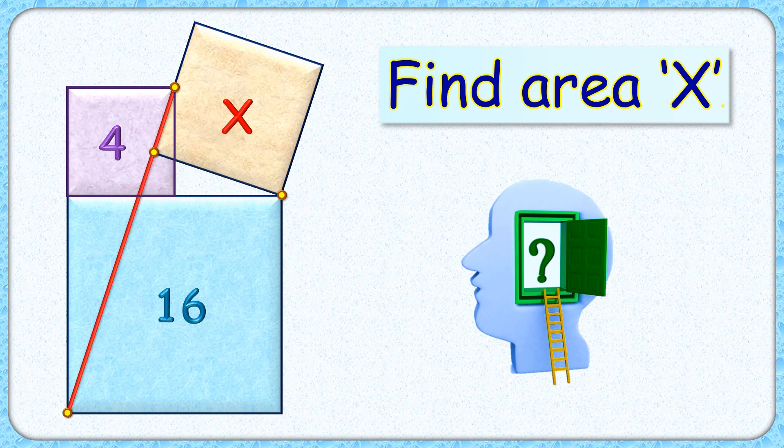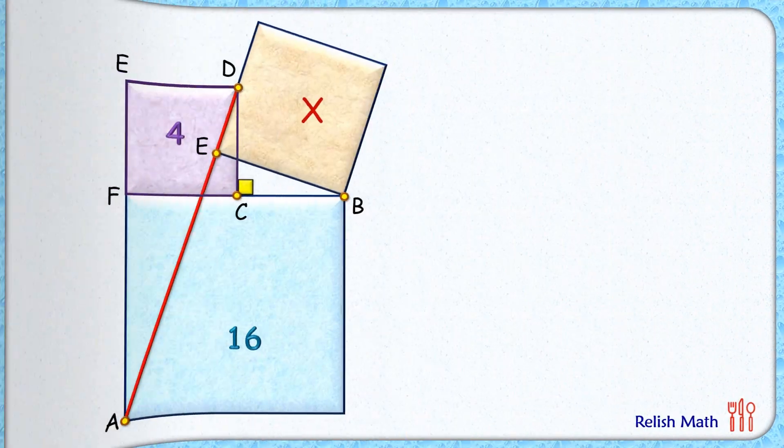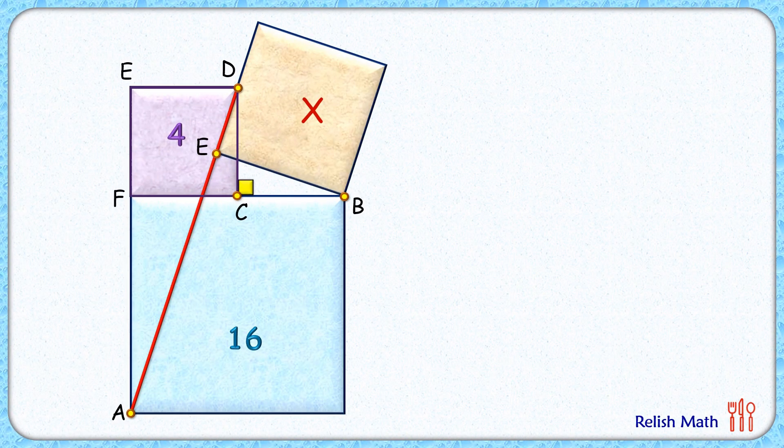Let's check this simple and elegant solution. For the blue square, as the area is 16, the side length will be 4 centimeters. For the purple square, the area is 4, thus the side length will be 2 centimeters.